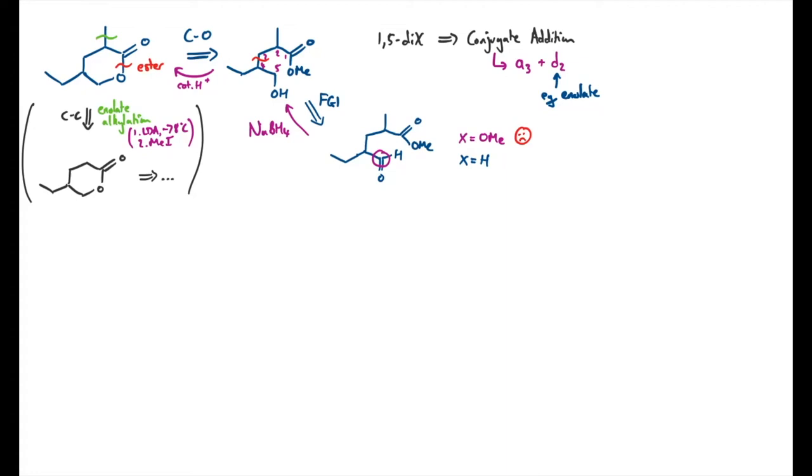Now the reason why this is good is that I can use sodium borohydride as a reducing agent, which is only nucleophilic enough to attack the aldehyde functional group. It's a much better electrophile, it's much less sterically hindered, and there's no conjugation going on compared to the ester, which is a bit more stable, needs a bit more of a powerful reducing agent. So there's an element of chemoselectivity here using the sodium borohydride reagent.